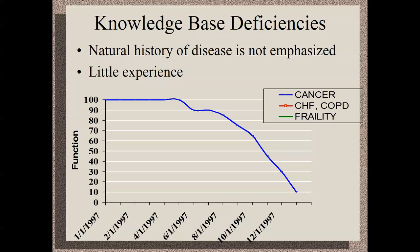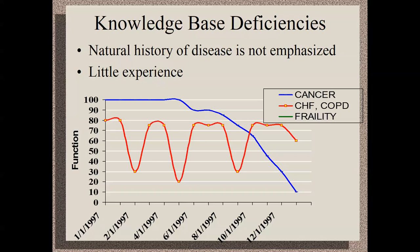The heart failure and COPD model is a different curve — up and down with exacerbations, any one of which could be fatal. If you pound patients too much about how sick they are, they say 'they've said that four times in the last six months and I'm still here.' Then you have the debility and dementia curve — vascular dementia, ALS, other conditions — a chronic progressive decline. Each disease has its own curvature.